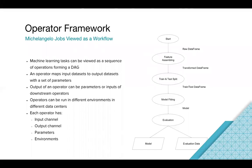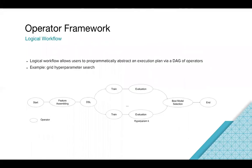This is the logical concept of a workflow — all we present to the end user. Here is how we describe a hyperparameter search using this operator concept. You can see this is a simple grid search paradigm. We have a start operator followed by feature assembly. DSL represents the domain-specific language which transforms the raw feature data to some canonical form. Then we have parallel running training plus evaluation graphs, and we have a best model selection operation which waits until all parallel training finishes and then finds which model is best based on the hyperparameter configurations. This is a simple logical description of how we perform hyperparameter search and how we translate this logical operation to an execution plan.